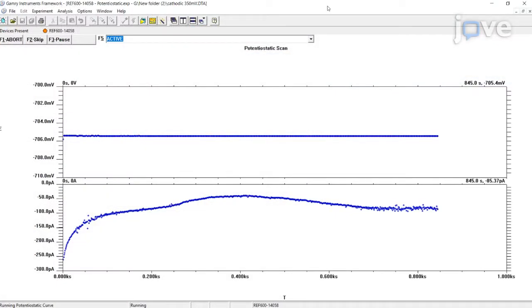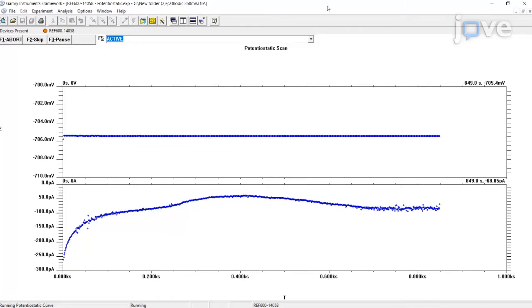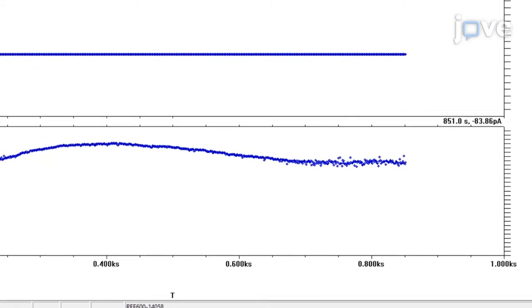To set up the wear test, in the Universal Mechanical Tester software, apply a 1 Hz scratch frequency, 5 mm scratch length, and 0.5 N normal load. Then click Run to begin the tribo-corrosion.